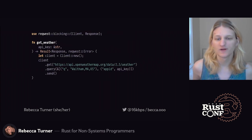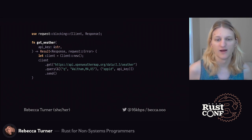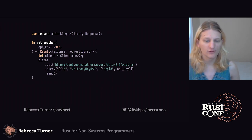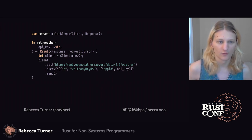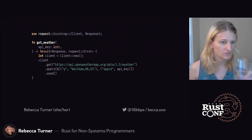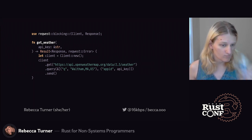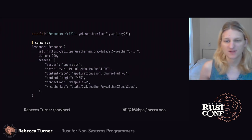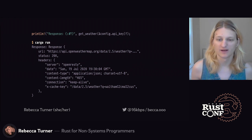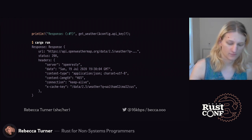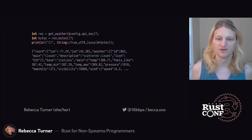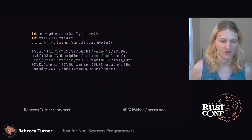Now we're going to use the reqwest library to make a simple call to the OpenWeather API. We create an HTTP client object, call the get method with the endpoint URL, add some query parameters, and send the request off. We can see when we pretty-print the response object we get all the fields we might expect — headers, a status code, and so on. And we can also print the response text, which is this big minified JSON blob. We're going to deserialize that too, but first let's clean up our interface to the OpenWeather API.